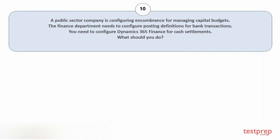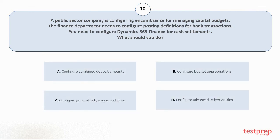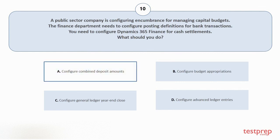Question number 10: a public sector company is configuring encumbrance for managing capital budgets. The finance department needs to configure posting definitions for bank transactions. You need to configure Dynamics 365 Finance for cash settlements. What should you do? Your options are: A. Configure combined deposit amounts. B. Configure budget appropriations. C. Configure general ledger year end close. D. Configure advanced ledger entries. The correct answer is option A.